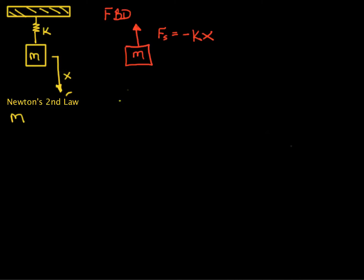M X double dot is equal to your force, which in this case is just the spring force, which equals minus K times X. We choose to rewrite this by moving everything over to one side. M X double dot plus K X is equal to zero. Call that equation 1.